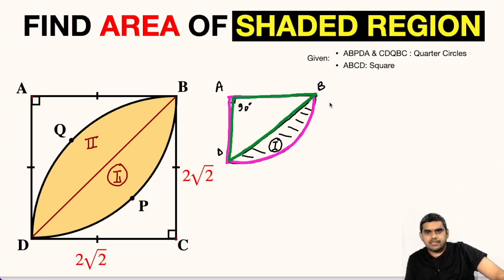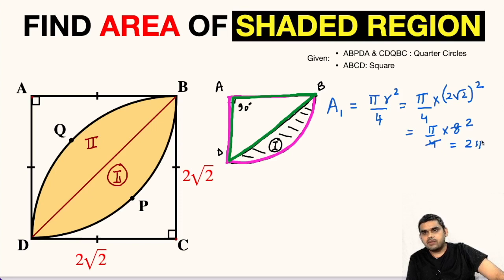Area of this quarter circle will be equal to, let us name it as A1. So, area of this quarter circle will be equal to π times R squared divided by 4 which will be equal to π by 4 times (2√2) whole squared. This will be π by 4 times 8, so this will be 2π. We have found the area of this pink quarter circle.